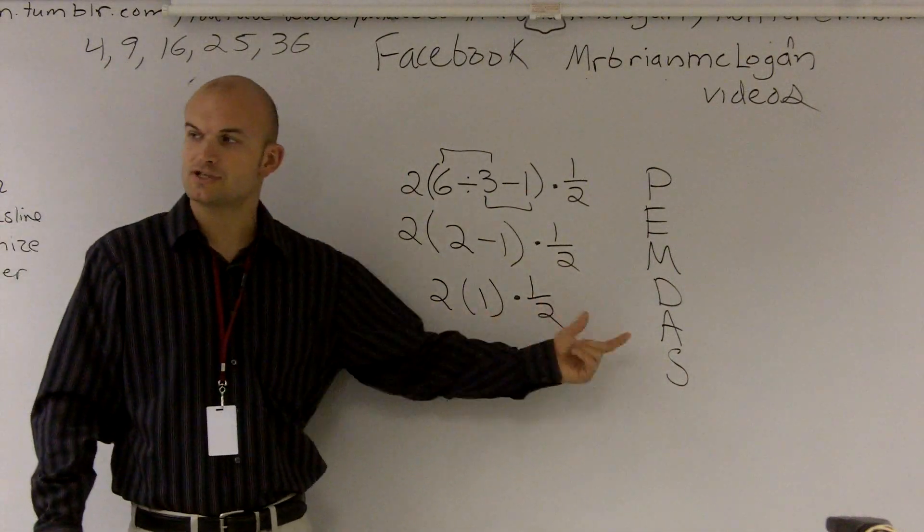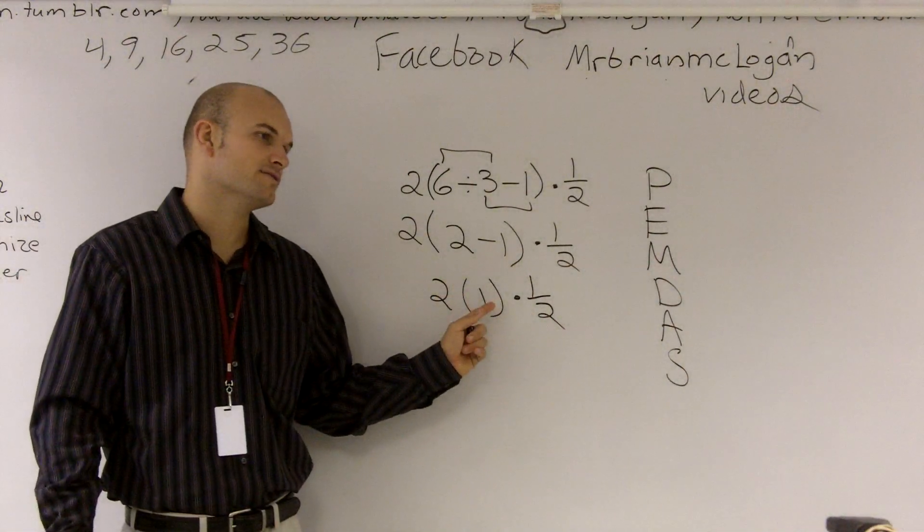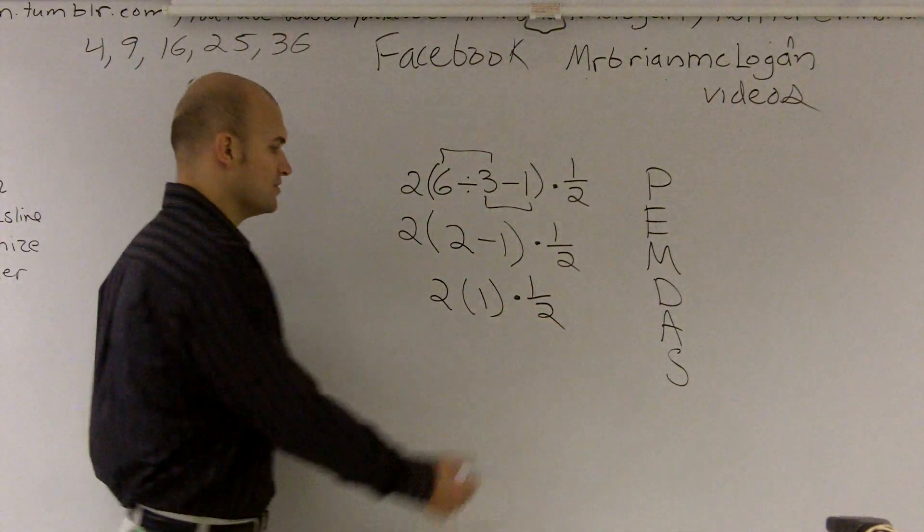And then here we just have multiplication. 2 times 1 is 2, times 1 half is going to give you 1.